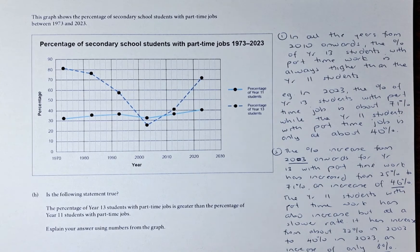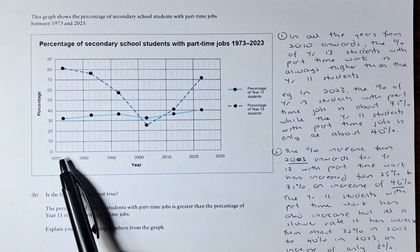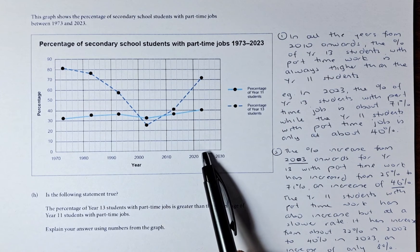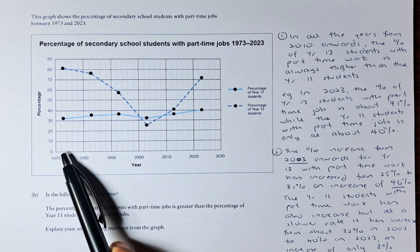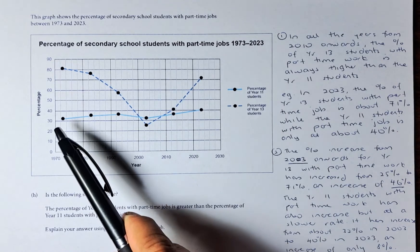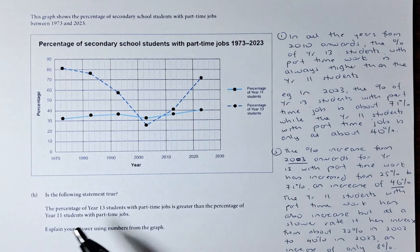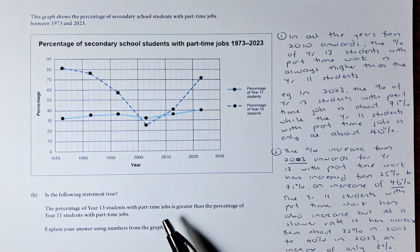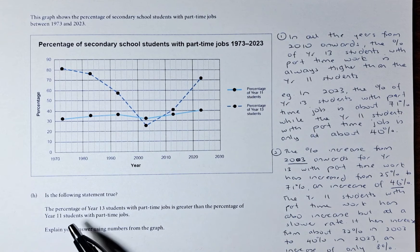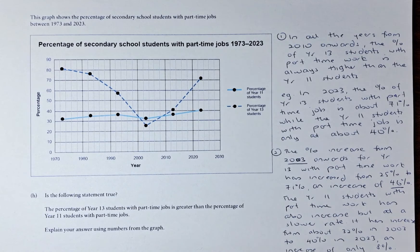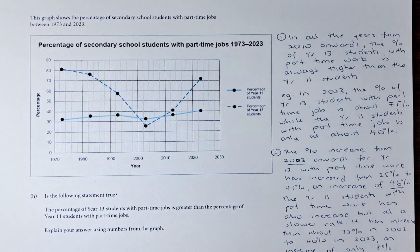Every line on the graph represents two years, so if the dot is in the middle of a line it's an odd year, and if it's on the line it's an even year. The question asks: is the following statement true? The percentage of Year 13 students with part-time jobs is greater than the percentage of Year 11 students with part-time jobs. Explain your answer using numbers from the graph — you must use numbers from the graph.